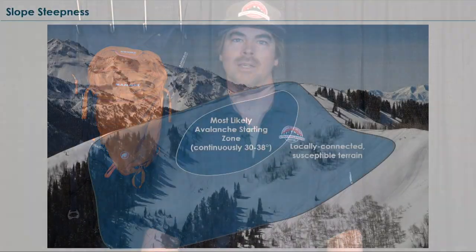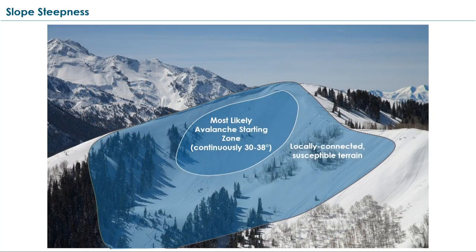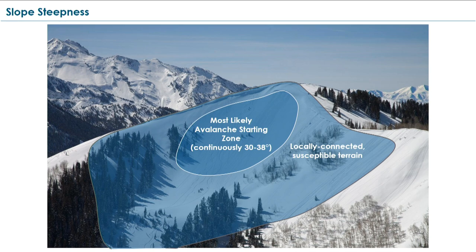Just because you're not on a piece of terrain that's between 30 and 45 degrees in steepness does not mean you're totally safe and clear from avalanches. We want to be looking at what's above us, what's beside us, and what we're going to be skiing down into.